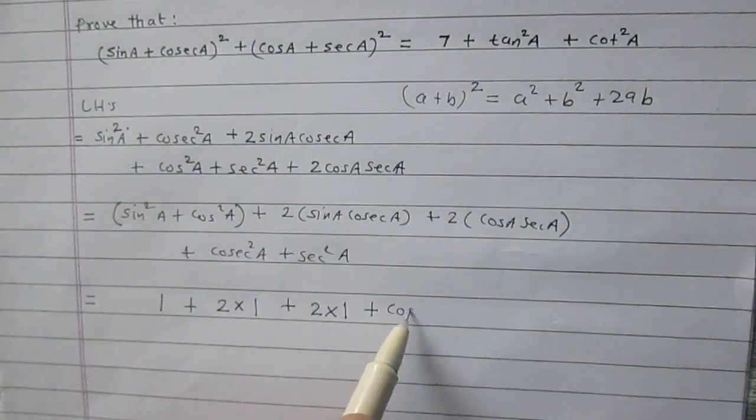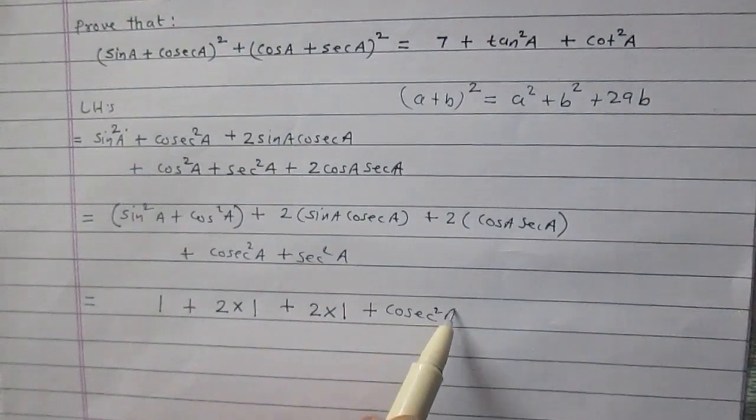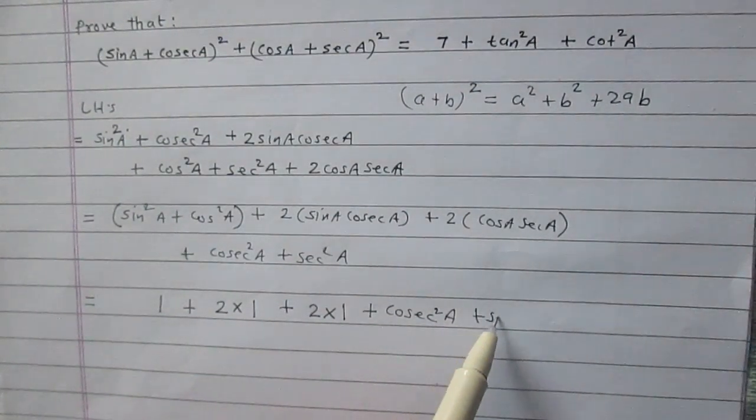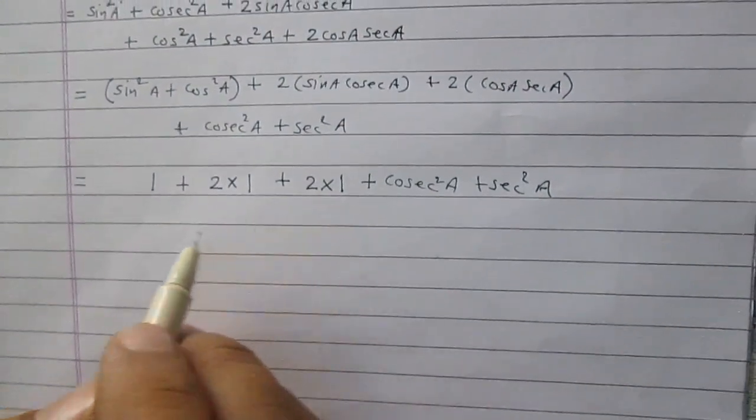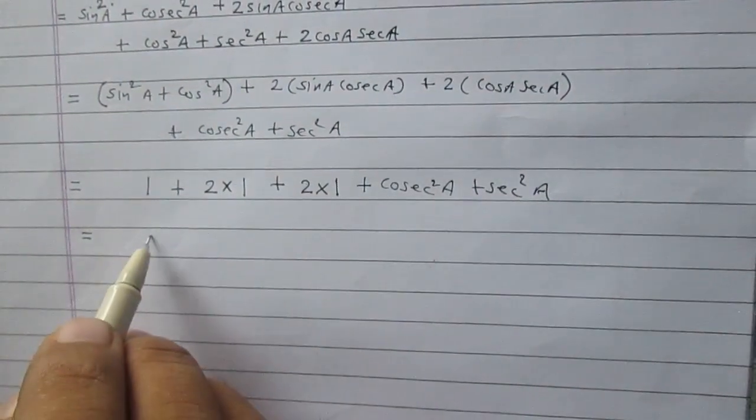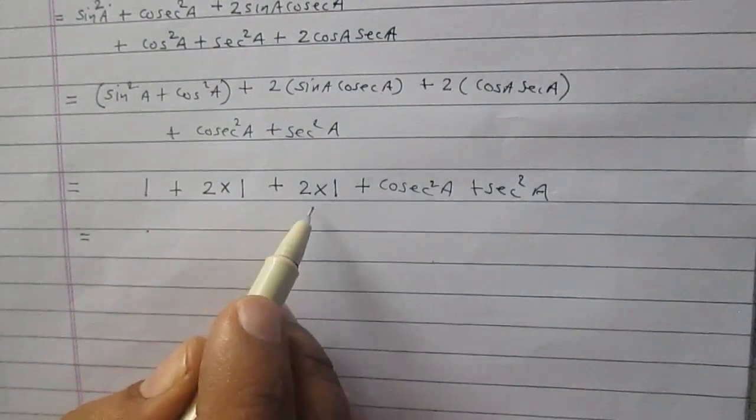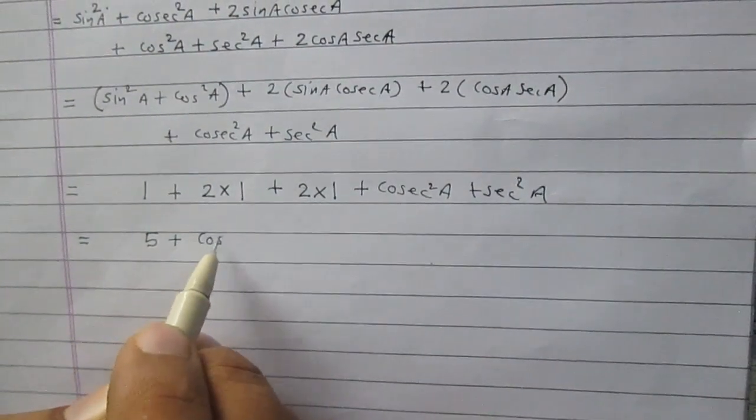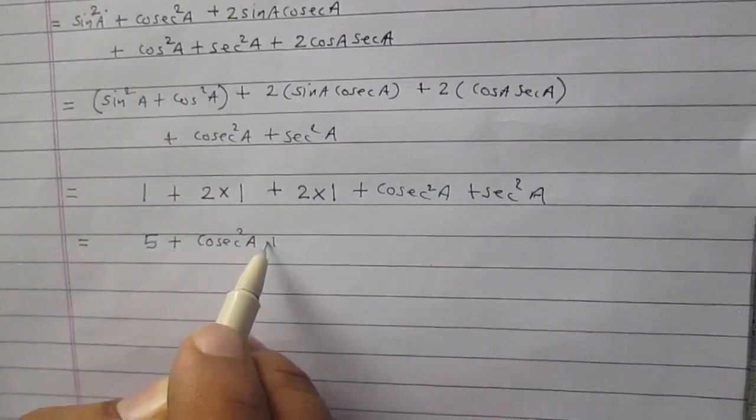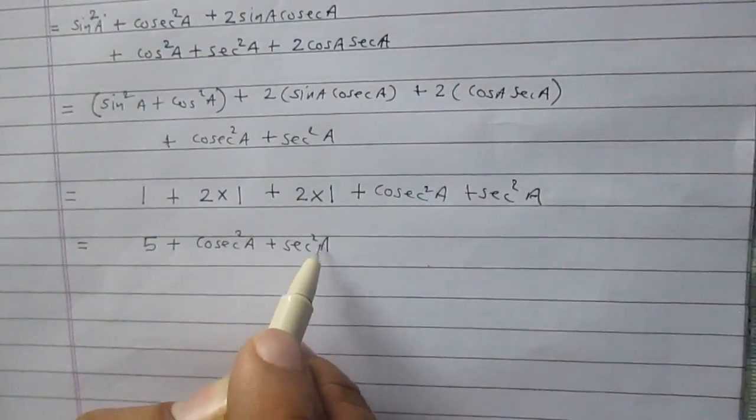And the remaining terms, cosec square a and sec square a. After simplification, it is 1 plus 2 plus 2, that is 5. So we got 5 plus cosec square a plus sec square a.